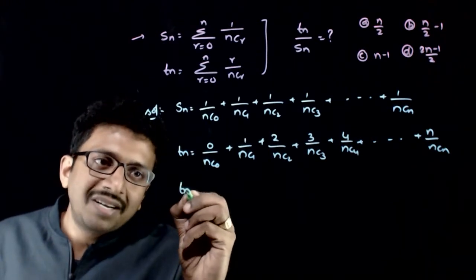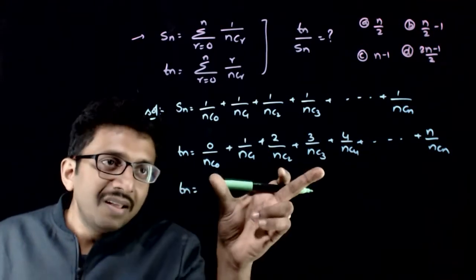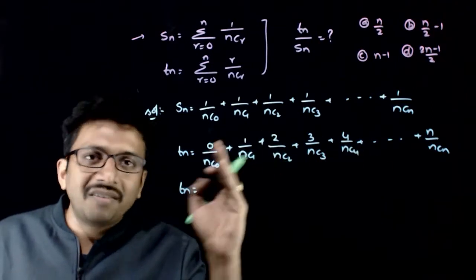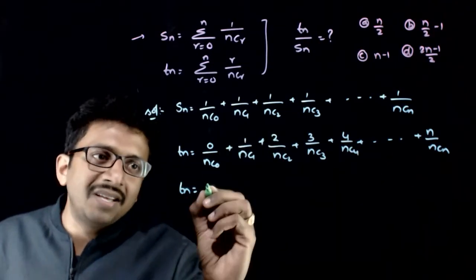What I do is Tn is equal to - the Tn is nothing but the sum of this. I will write all these terms in the reverse order. That is, I will write n by nCn first.